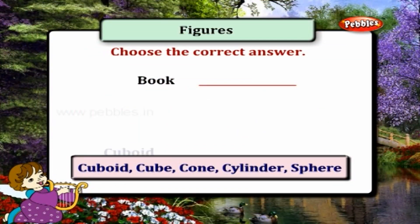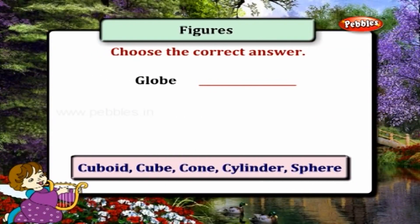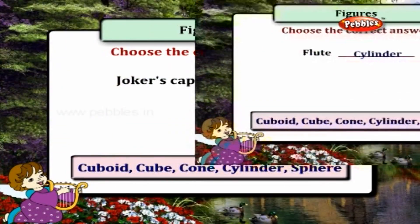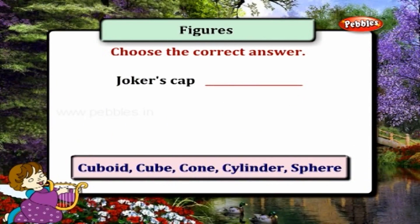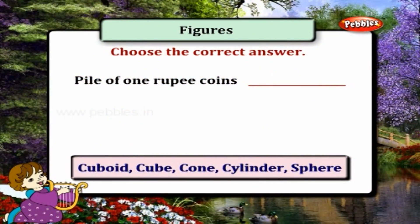Book — cuboid. Globe — sphere. Flute — cylinder. Joker's cap — cone. Pile of 1 rupee coins — cylinder.